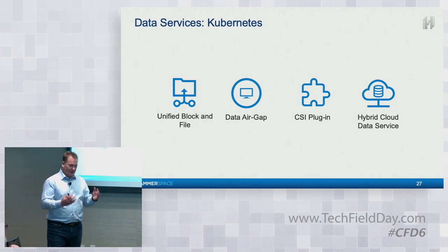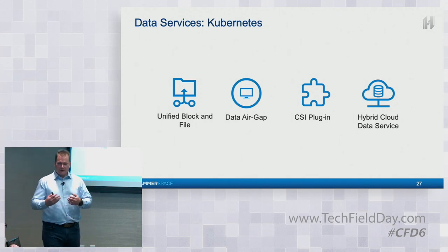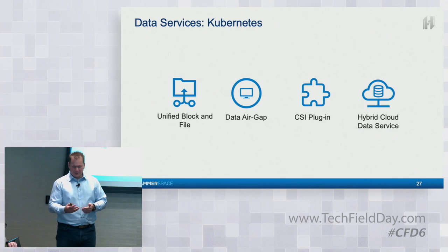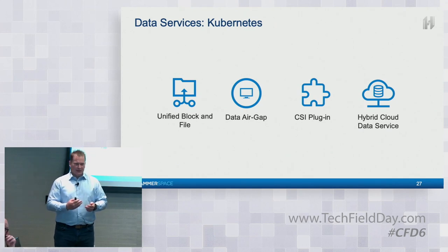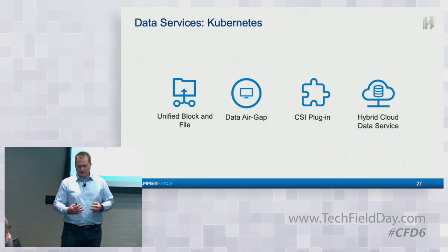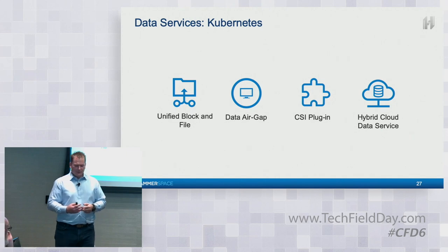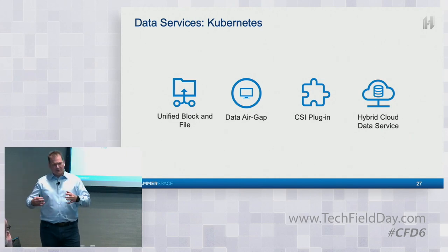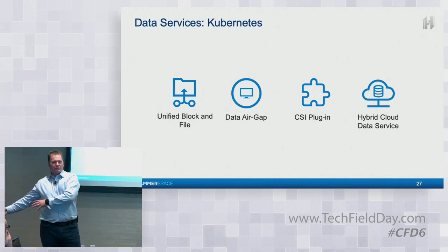We can unify applications in Kubernetes out of Hammerspace that runs out of block level access, as well as file level and NFS level sharing within Kubernetes infrastructure. So it makes it really flexible. It also allows us to take all the existing infrastructure customers we have and make it Kubernetes native.